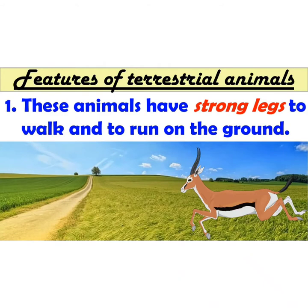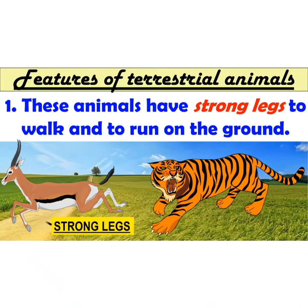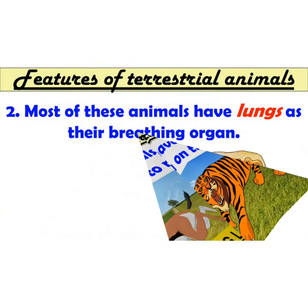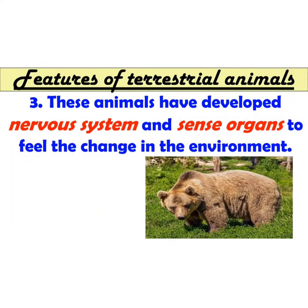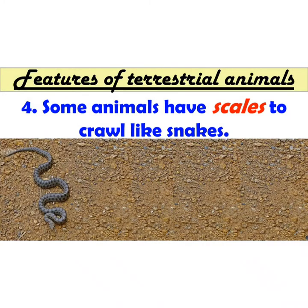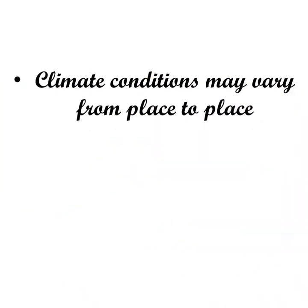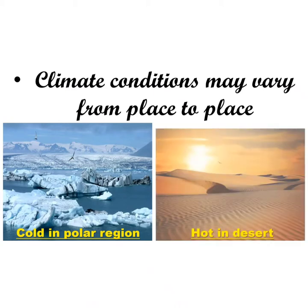Terrestrial animals like deer and tiger have strong legs to walk and run on the ground. Most terrestrial animals have lungs as their breathing organ. They have well-developed nervous systems and sense organs to feel changes in the environment. Some animals like snakes do not have legs to move around — they crawl with the help of scales on their bodies. Climate conditions may vary from place to place. It is cold in the mountains and in the polar region, whereas it is very hot in the desert.